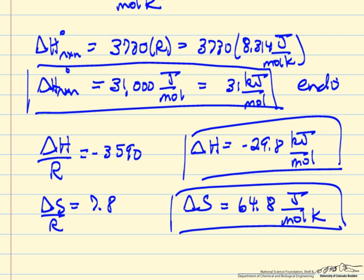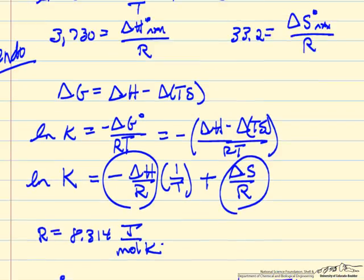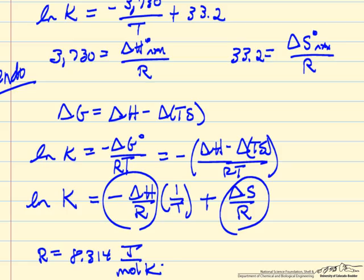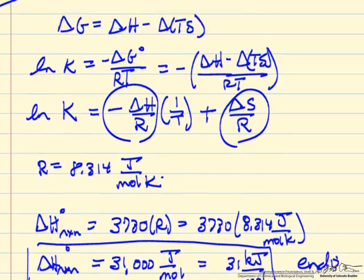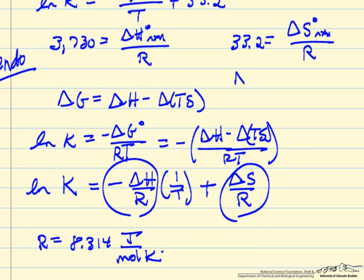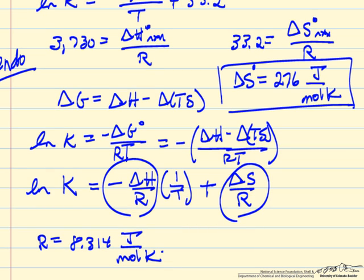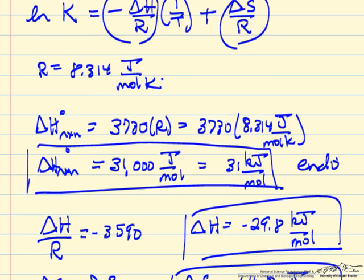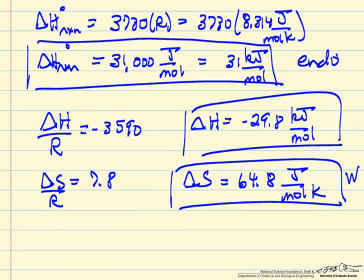So one reaction is endothermic, the other is exothermic, and notice that the delta S change, and I guess I forgot to calculate, so let's look at the delta S change. So delta S change for, this is for protein Q, is much larger than for protein W.